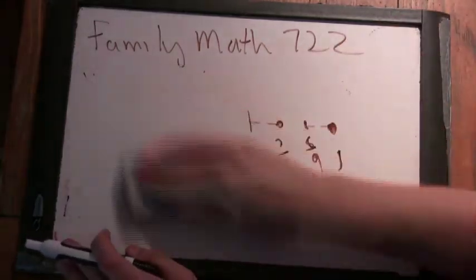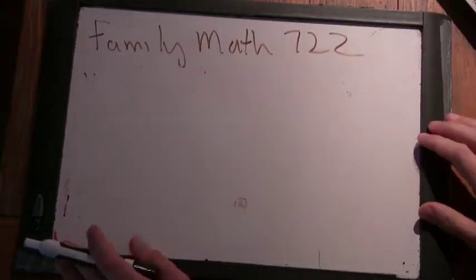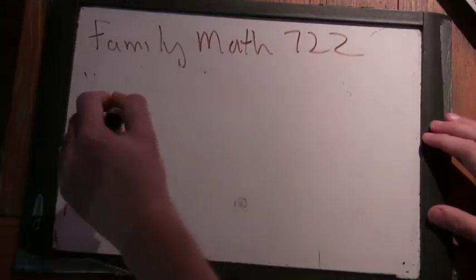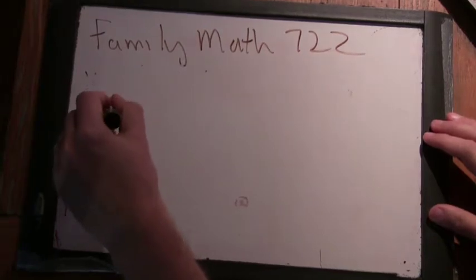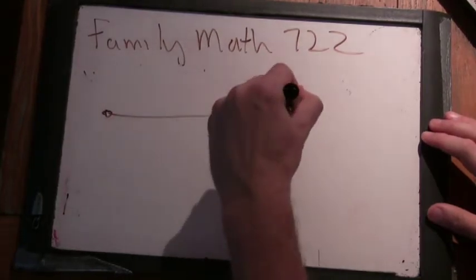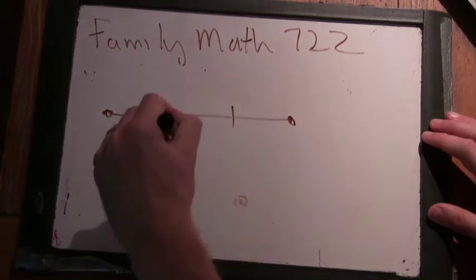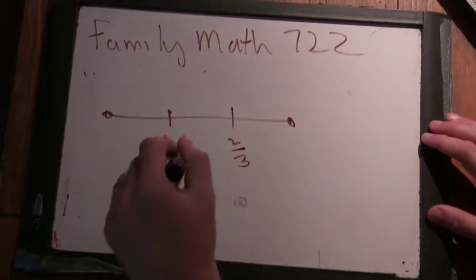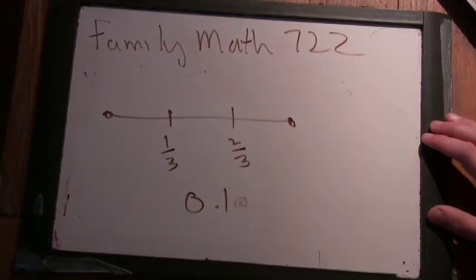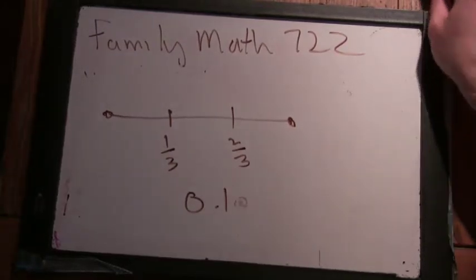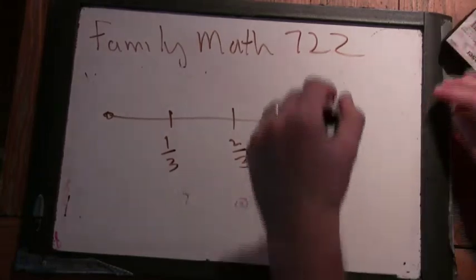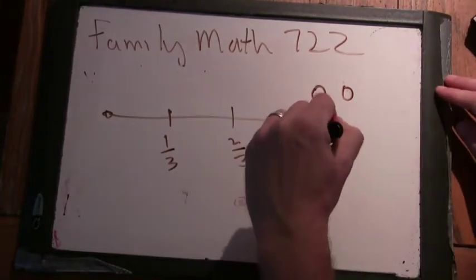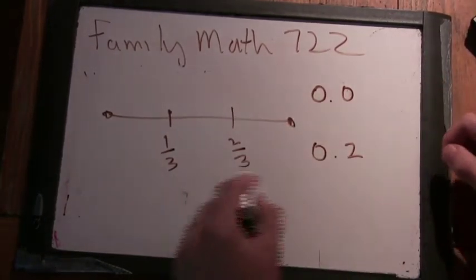So there's something interesting that happens when we look at this in base 3, which is why I had you start in base 3. What happens is you remove the numbers between one third and two thirds initially, and those are the numbers that start in base 3 with a 0.1. Yeah. Okay. So initially then you only have numbers that start with 0.0 and 0.2 after the first step.